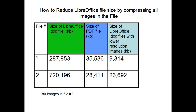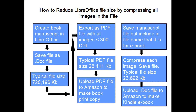A recent book I did had 75 images so I had to do that operation 75 times, but it really does reduce the file size. I made a flowchart to better explain my overall process. Starting in the upper left corner, I create my book manuscript using LibreOffice and save it as an old Word .doc format. In my last project the finished book manuscript was 720,000 kilobytes or 720 megabytes — a pretty big file. I then used the export feature in LibreOffice to create a PDF file where all the images were 300 dots per inch or less, and for that project the resultant PDF was 28,411 kilobytes or 28 megabytes.